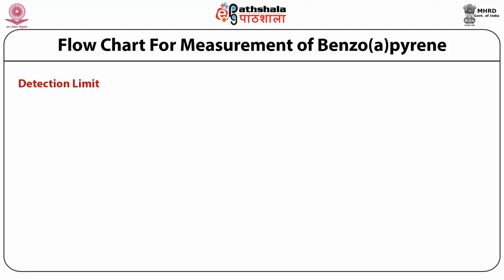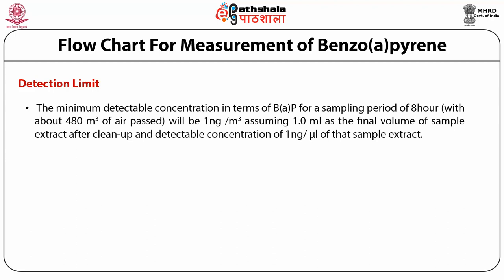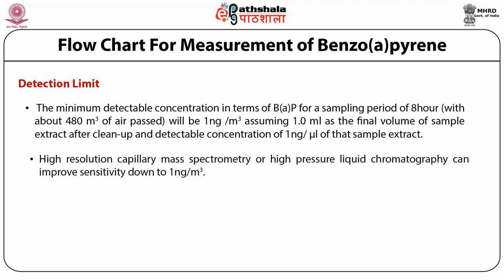The detection limit of the developed method is determined using various formulas. For the minimum detectable concentration of benzopyrene for a sampling period of 8 hours with about 480 meter cube of air passed, it will be 1 nanogram per meter cube, assuming 1 ml as the final volume of sample extract after cleanup and a detectable concentration of 1 nanogram per microlitre of sample extract. High resolution capillary mass spectrometry or high pressure liquid chromatography can improve sensitivity down to 1 nanogram per meter cube.